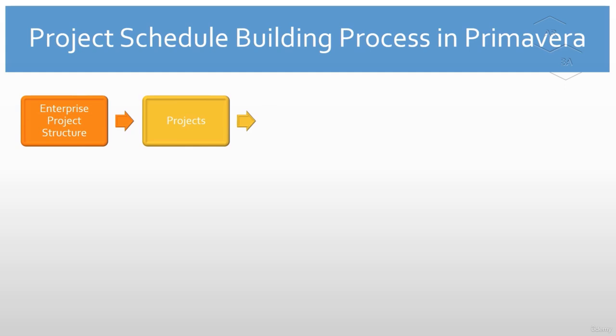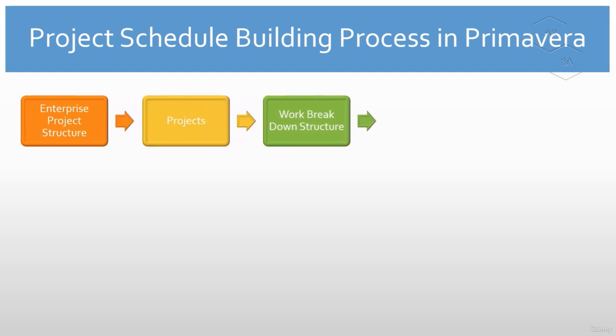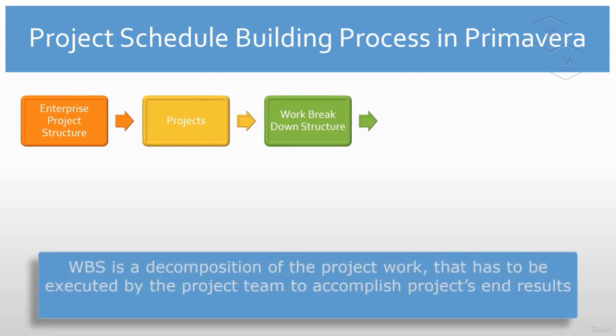Then in step 2, by keeping our project objectives and end product in mind, we will break down and divide our whole project work into parts or sections — more precisely, a WBS. WBS is a decomposition of your project work that has to be executed by the project team to accomplish project goals and results. All the work in the WBS has to be identified, estimated, scheduled and budgeted.